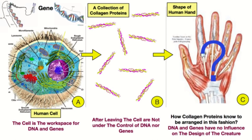As you can see on the screen, let's go from left to right. On the left, we have the cell, which is the workspace of genes and DNA, meaning that genes and DNA can only work within the cell. When the DNA is read, proteins are produced and excreted outside of the cell. Let's take the collagen protein as an example — as you can see in the middle, we have millions and millions of collagen proteins outside of the cell.